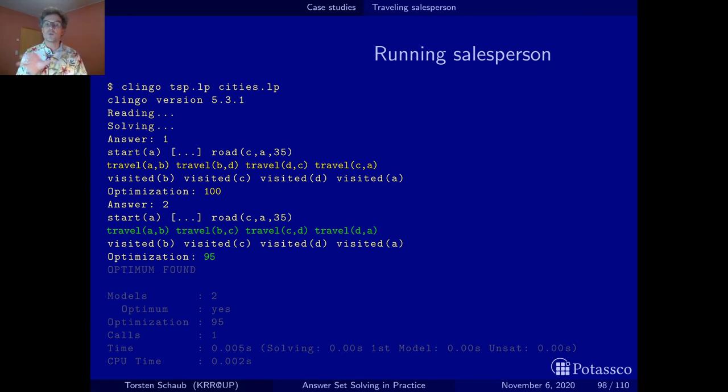It also has options to enumerate all optimum ones but I don't want to discuss this now. Anyway then it terminates it says an optimum is found two models were generated by looking for it the yellow one and the green one and the optimum found is 95. In this way we actually know that all optimum solutions must have a value of 95 and there may be others but we can look for them.